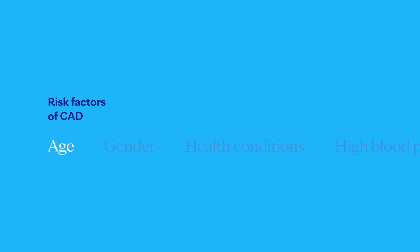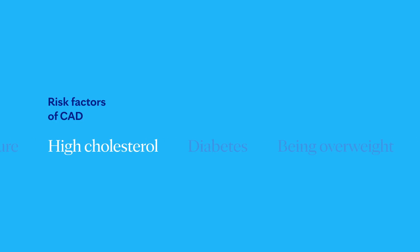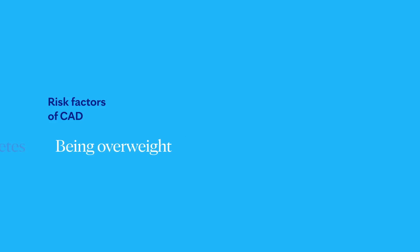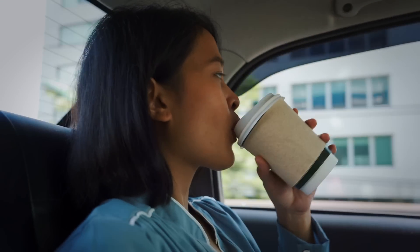First, getting older can mean more damaged and narrow arteries. Second, men are generally at a greater risk, but the risk for women increases after menopause. Existing health conditions matter too. High blood pressure can thicken your arteries, narrowing your blood flow. High cholesterol levels can increase the rate of plaque buildup. Diabetes is also associated with higher risk, as is being overweight. Your lifestyle plays a large role as well. Physical inactivity, long periods of unrelieved stress in your life, an unhealthy diet, and smoking can all increase your risk. And finally, family history — if a close relative was diagnosed at an early age with heart disease, you're at a greater risk. All these factors together can paint a picture of your risk for developing CAD.